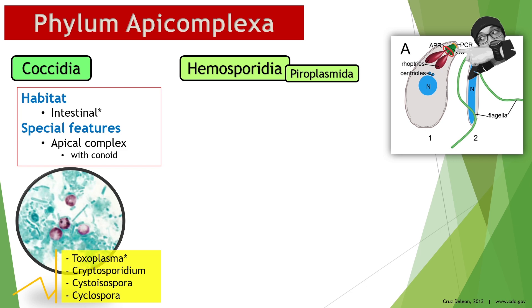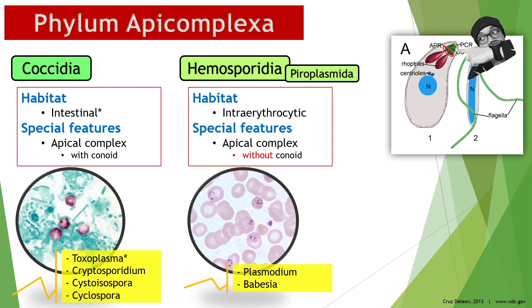Hemosporidians, or protozoans that live inside blood cells, do not form oocysts. They also do not have a feeding tube, hence they need to invade the cell in order to gather nutrients. Plasmodium is the best prototype member of this group, and we can also include Babesia, which technically belongs to another order, order Pyroplasmida.